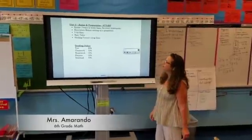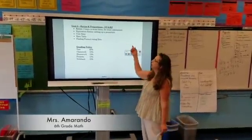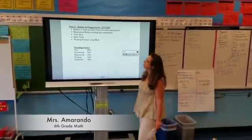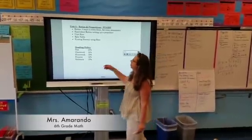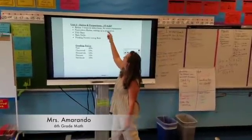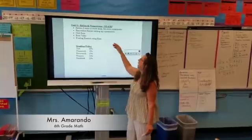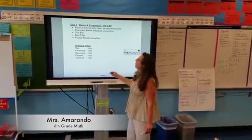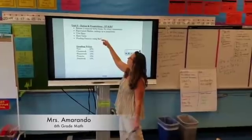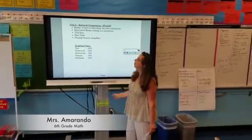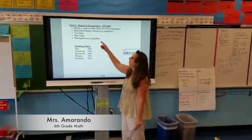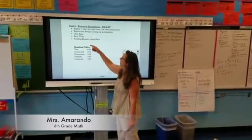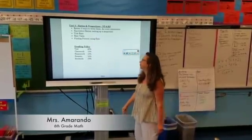Our third unit is ratios and proportions. The subtopics for ratios and proportions are writing ratios three different ways and writing for-every statements. Using equivalent ratios and setting up a proportion. Using unit rates and rate tables, and finding percent using rates.